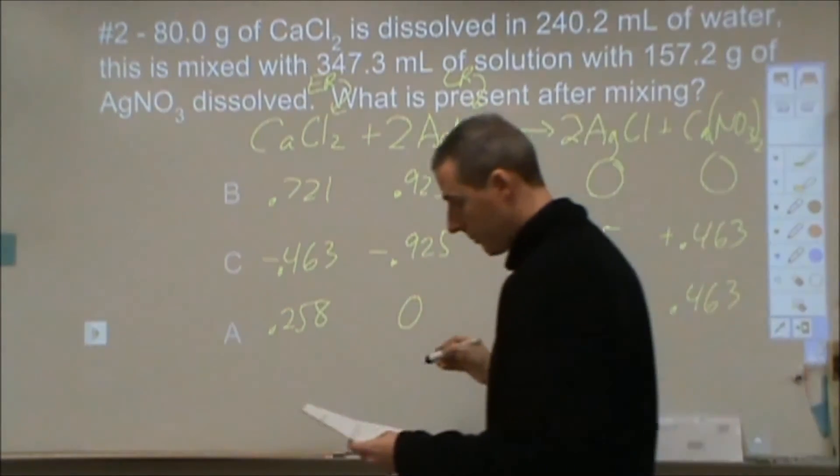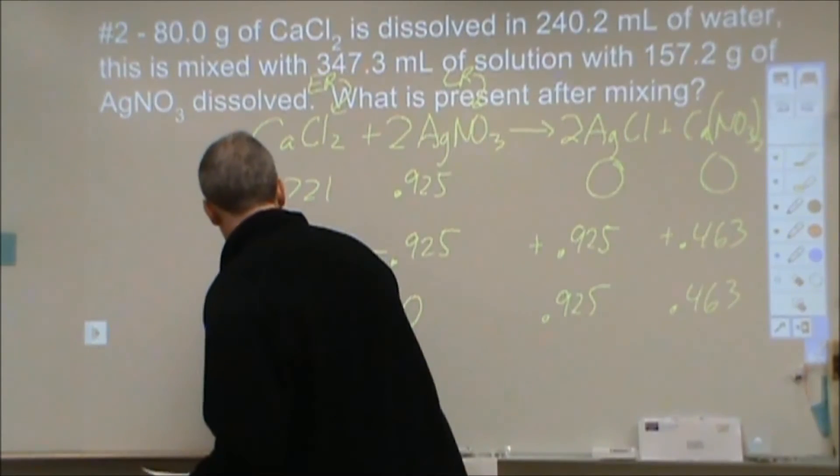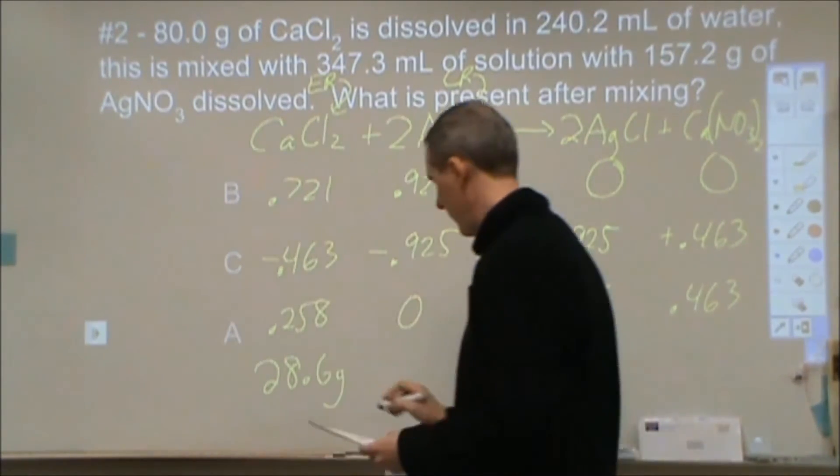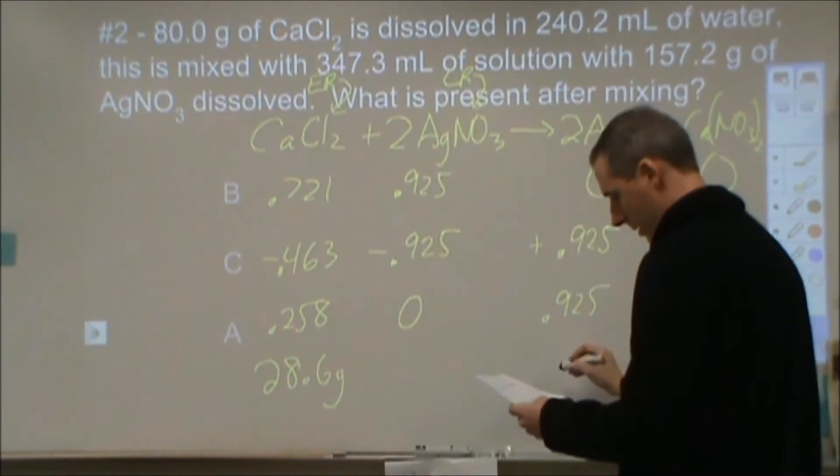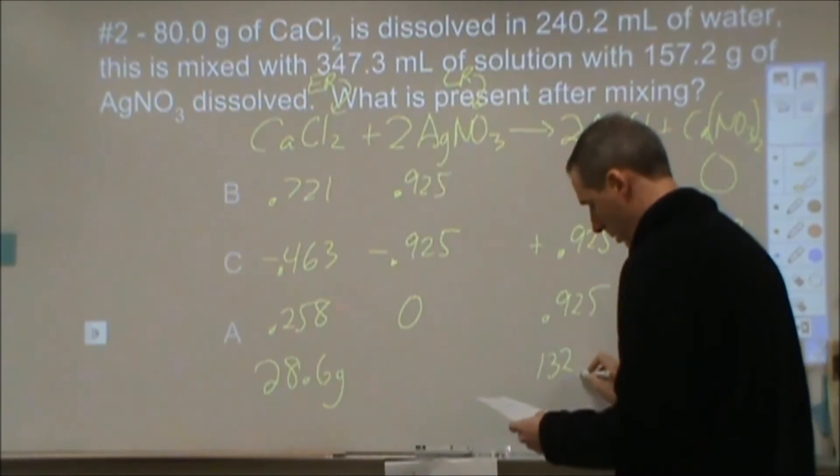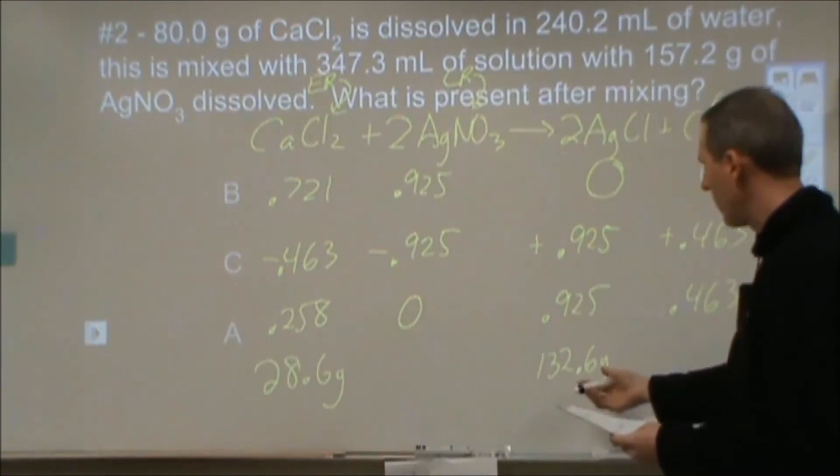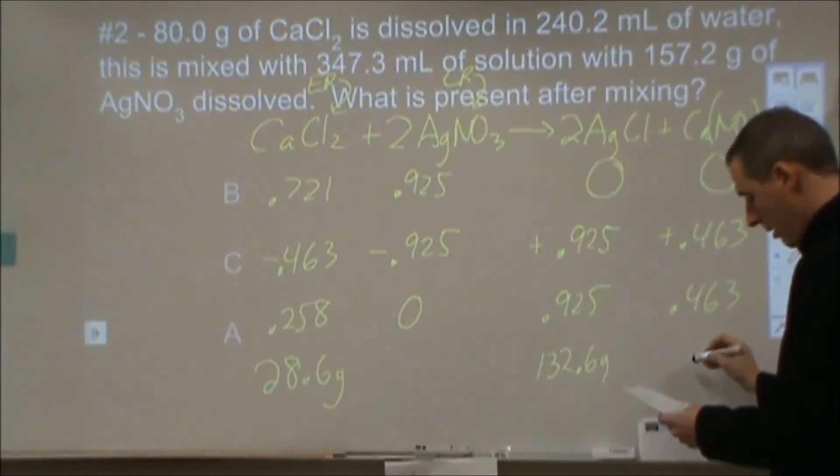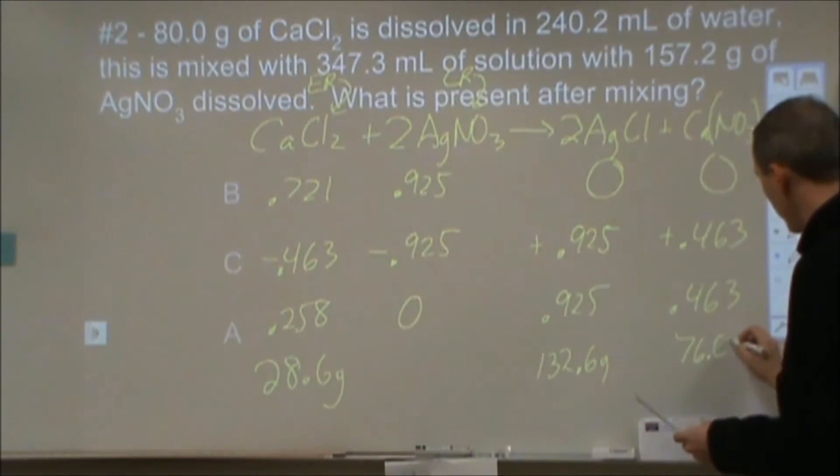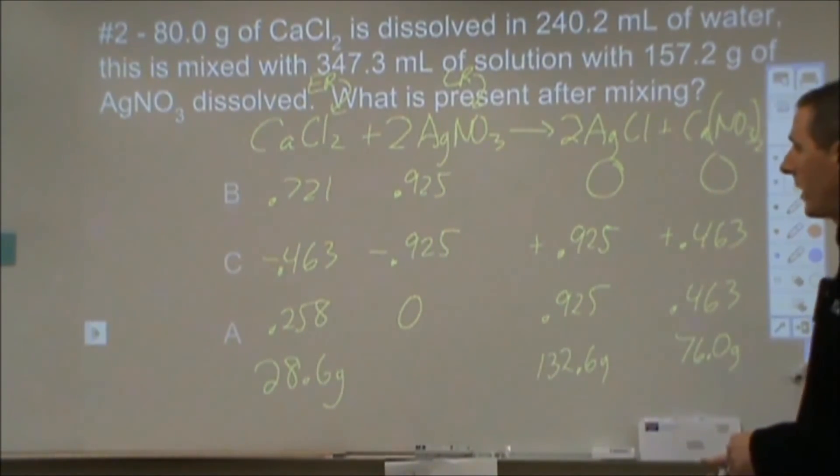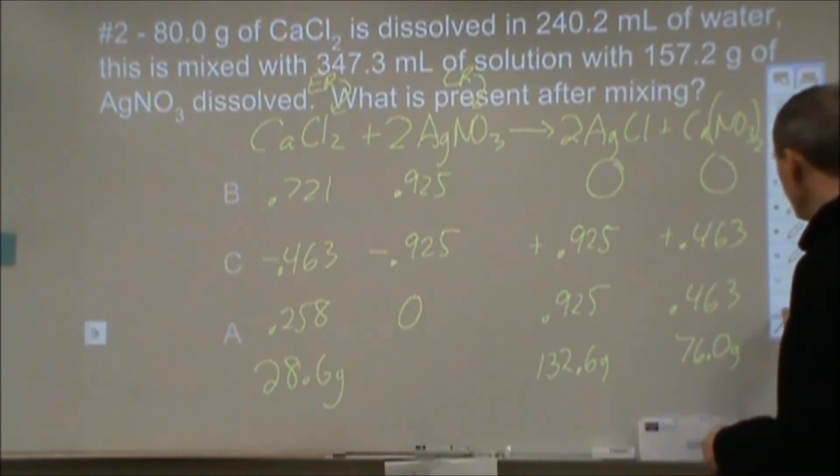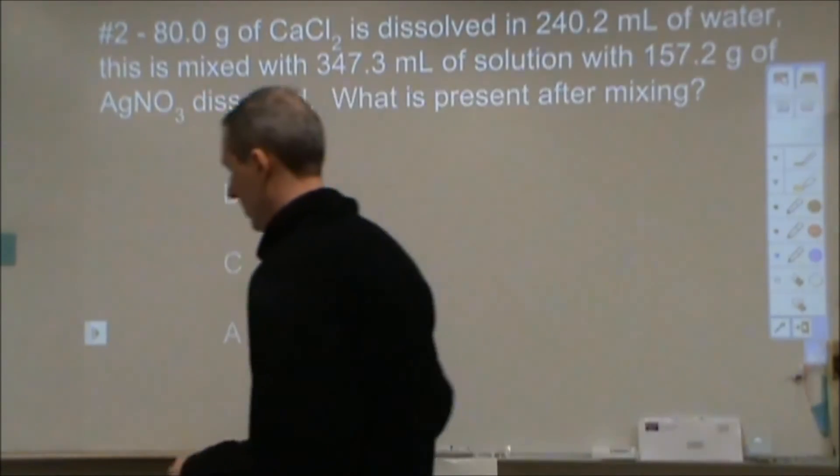Now the grams, that comes out to be 28.6 grams. That ends up being, for the 0.925, I have 132.6 grams of that, which I'll round to 133. And it's 76.0 grams. And I'm just multiplying by the molar mass to get this. Alright, one more to give you a little practice if you're still hanging in there.